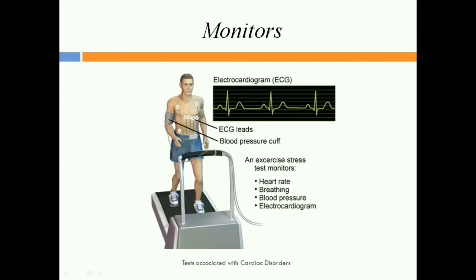What does the exercise stress test monitor? It monitors the patient's heart rate, breathing, oxygen saturation in the blood, blood pressure, and ECG changes. The ECG records PQRST waves — P, Q, R, S, and T — each having its own importance. Baseline recordings are taken before exercise, and then changes are monitored during the test.